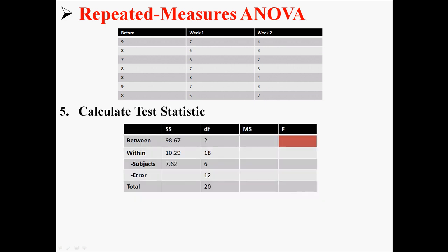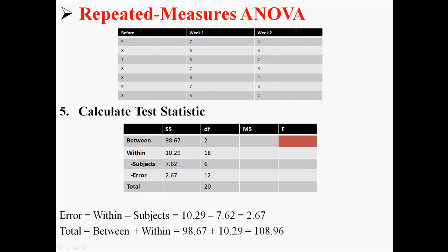So, so far we have found sum of squares between, sum of squares within, and sum of squares subjects. Now we're kind of going to take a shortcut to find these last two parts so we don't have to work through a whole lot of stuff. Now sum of squares error is equal to sum of squares within minus sum of squares subjects. So we can just take 10.29 minus 7.62 and get 2.67. And now the total is just sum of squares between plus sum of squares within. So we add together 98.67 and 10.29, and we get 108.96.